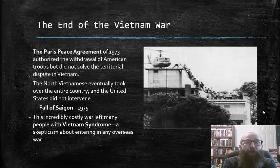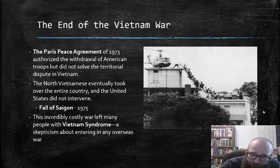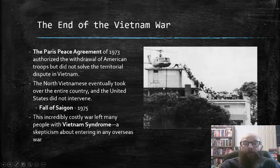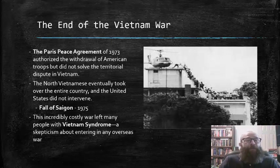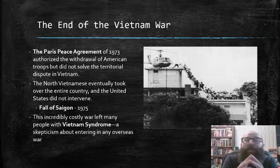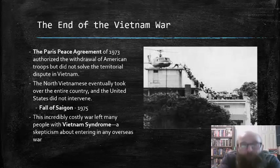Saigon was the capital of South Vietnam, and in 1975, North Vietnamese soldiers invaded and took over the capital. This photograph shows the last American helicopter leaving from the U.S. Embassy in Saigon as the North Vietnamese forces were taking over the city, with tons of South Vietnamese refugees attempting to board the helicopter to flee. This incredible, costly war left many people with what has been known as Vietnam Syndrome — a skepticism about entering any overseas war.